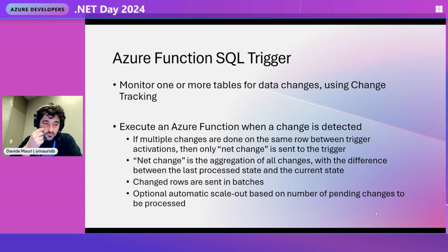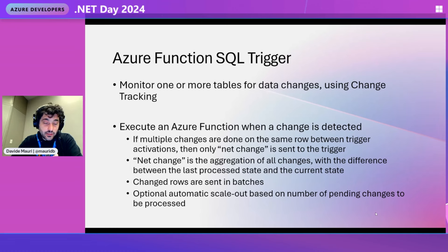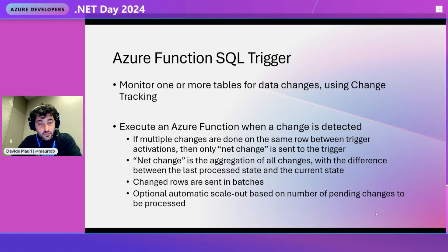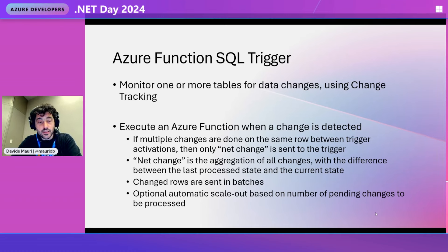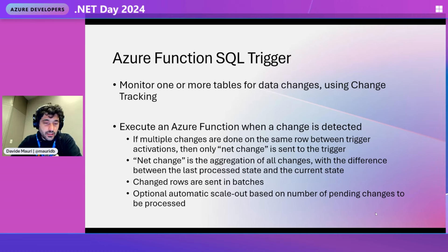There are some details you need to know. For example, what happens if you have multiple changes? If you have a sequence of changes that happen together — someone inserted a row and then immediately updated that row, and maybe did several updates — what you receive in the Azure Function is what we call the net change. That's the sum of the insert plus all subsequent updates, meaning you access the latest version of the row, not the intermediate changes. This is done for performance reasons, and on average you only need the latest version.